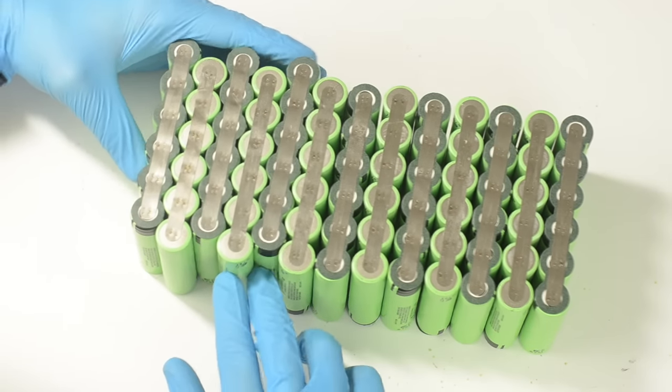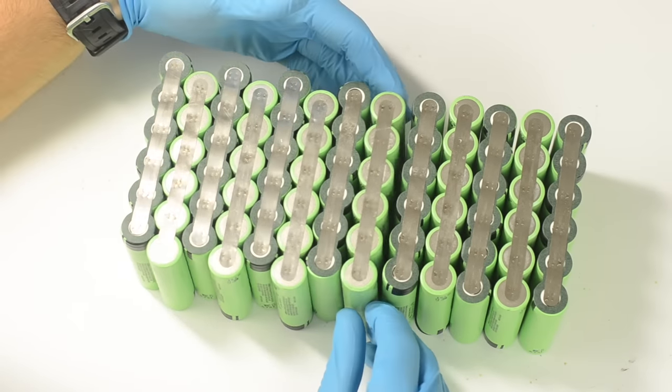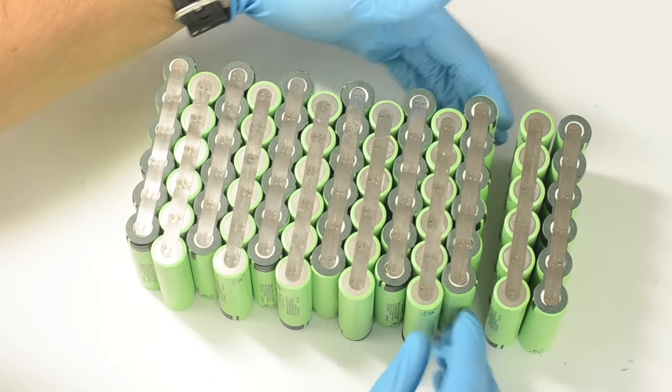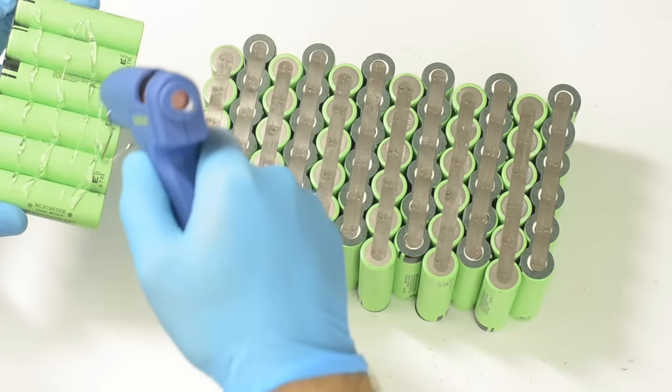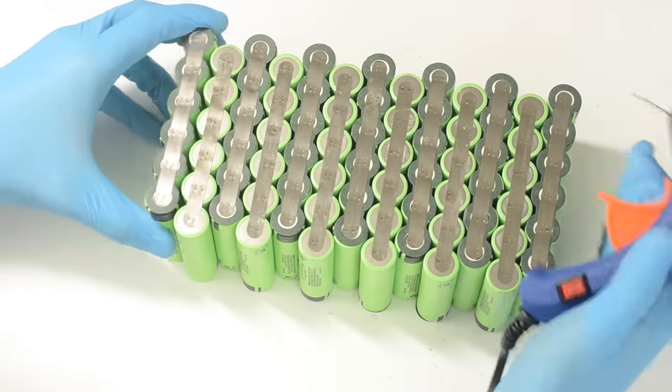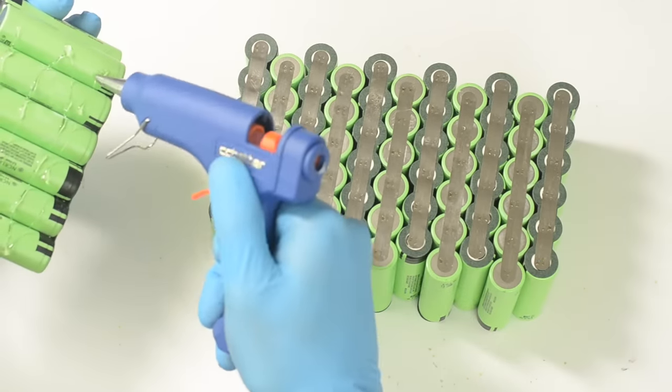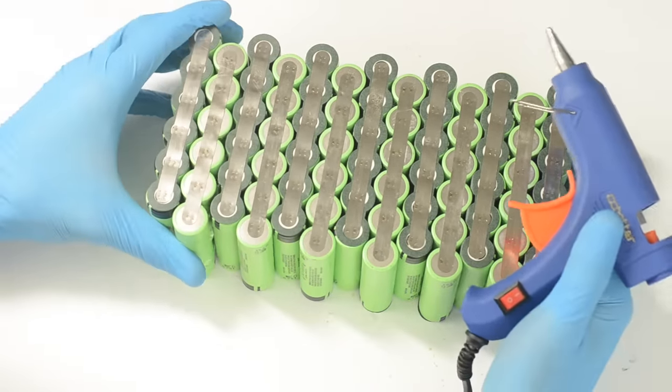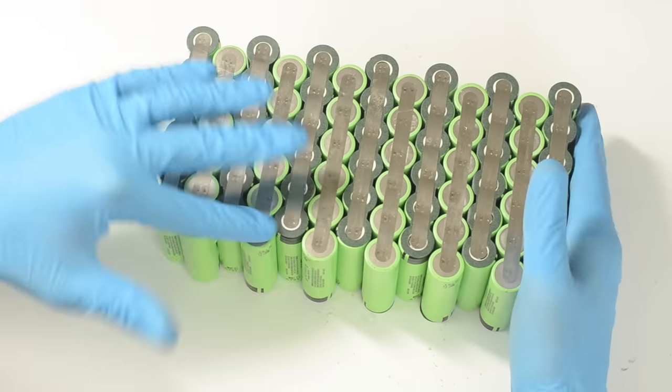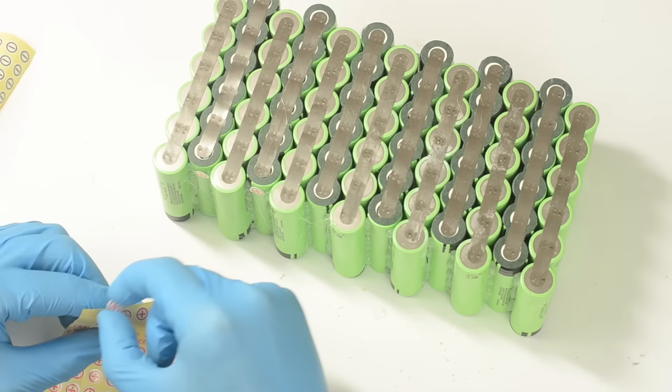Next you're going to alternate your modules with positive up on one end and then negative up on the next, and then you're going to offset them like you see here. Then you're just going to go ahead and hot glue all of your modules together. You don't have to go nuts with the hot glue, just make sure you've got enough to basically hold them together. In the end we're going to heat shrink the entire pack, so this is just to keep things together in the meantime.